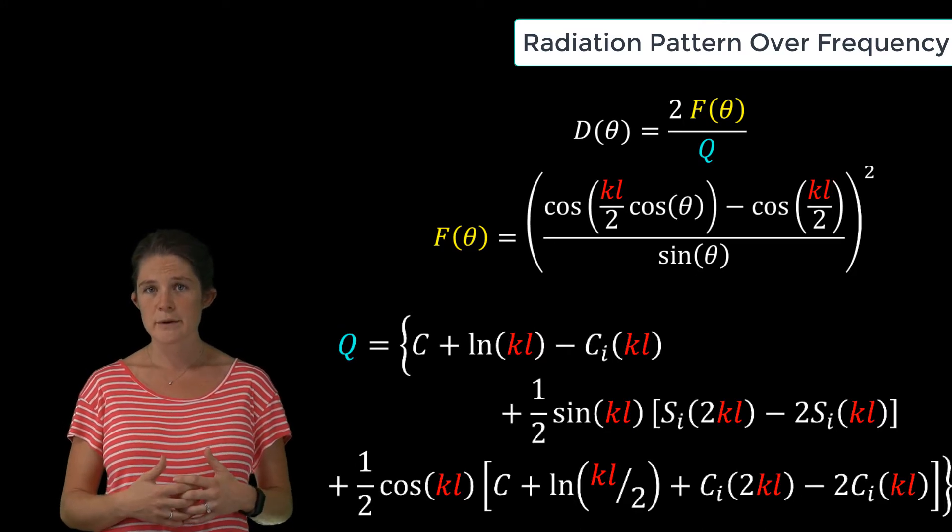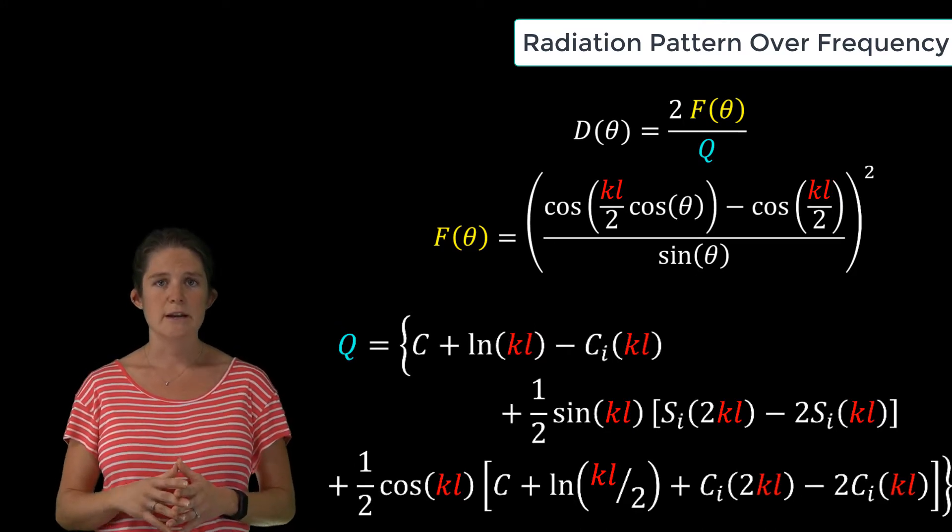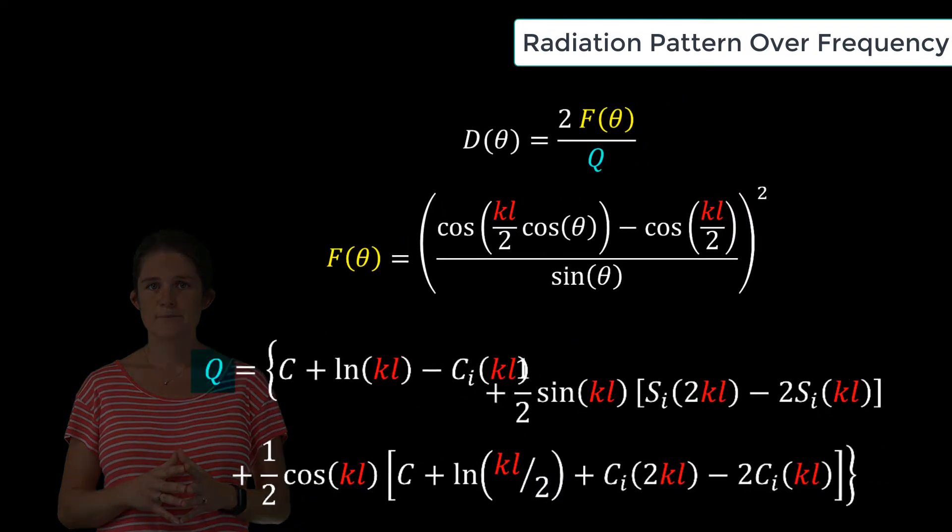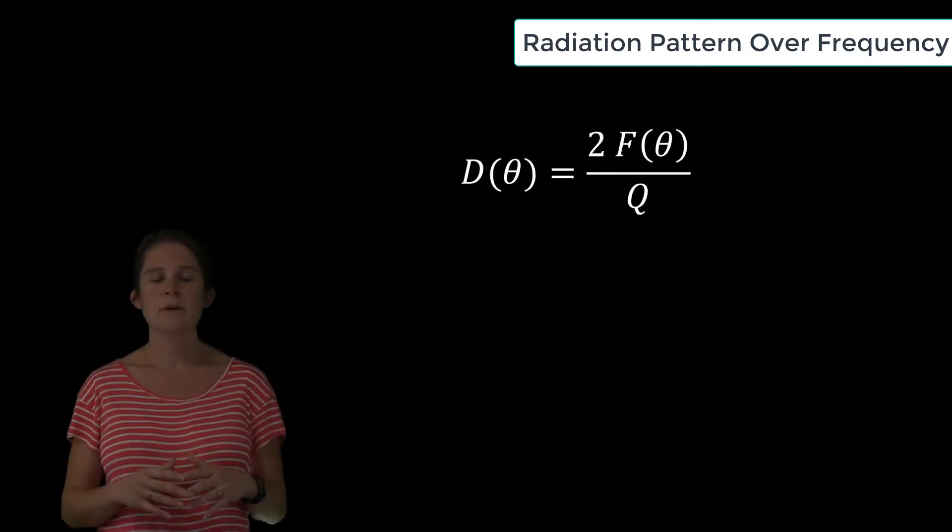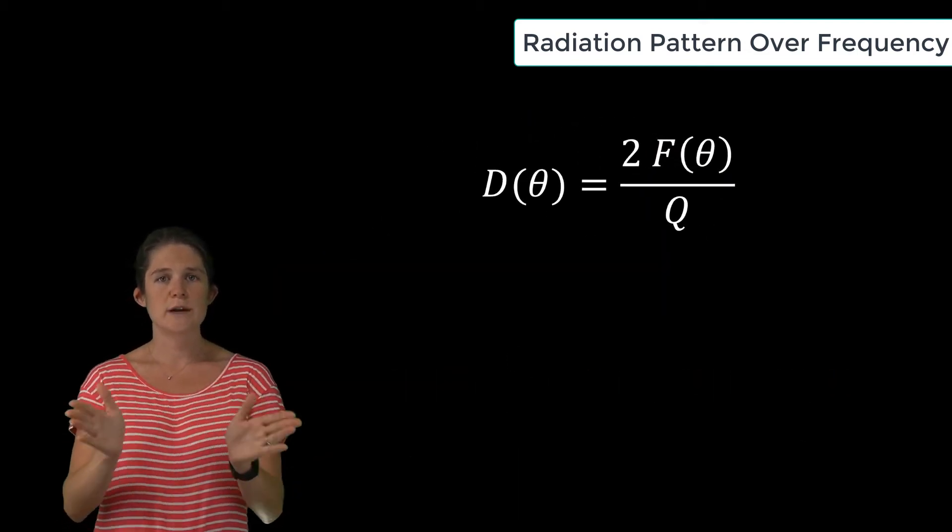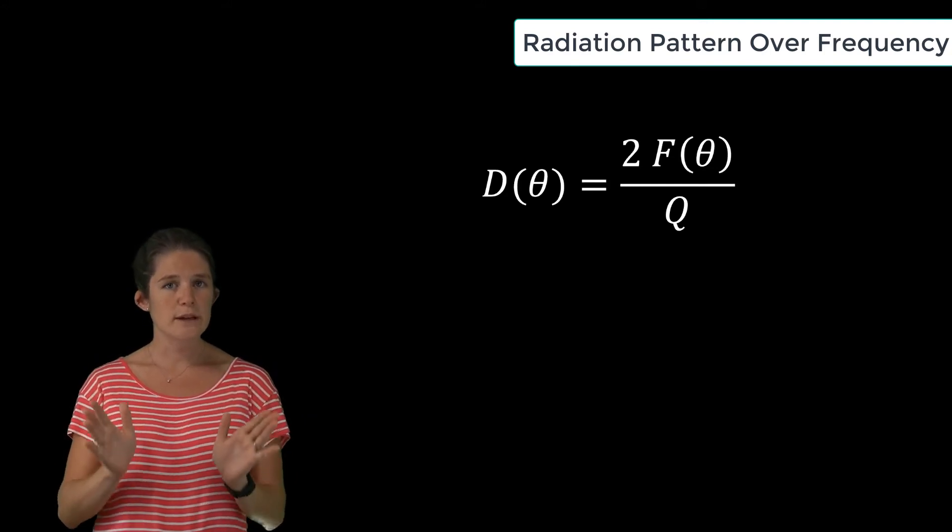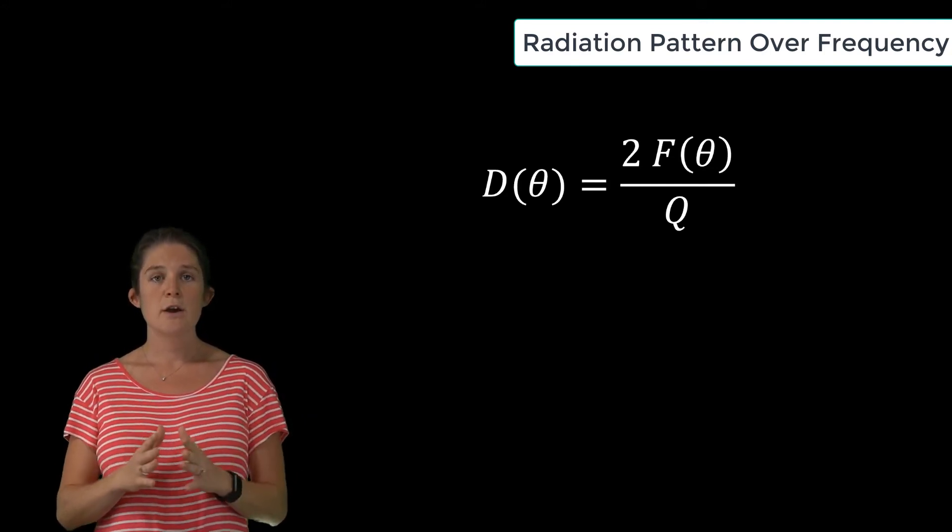Now, since the radiation pattern is symmetric with respect to Phi, we can fully describe the radiation pattern by plotting it on any constant Phi plane.